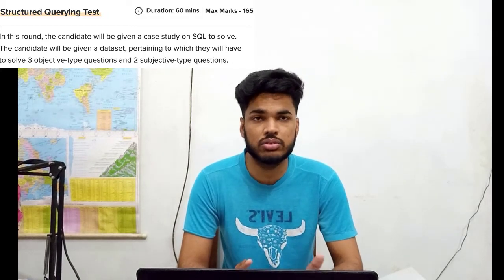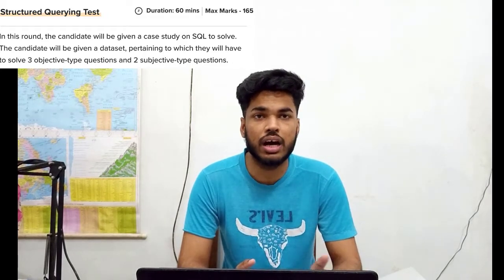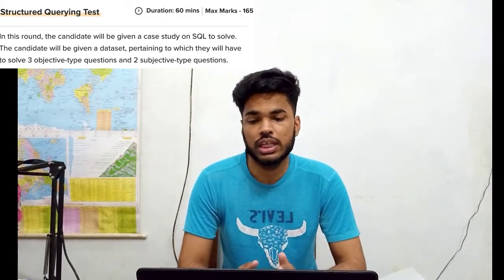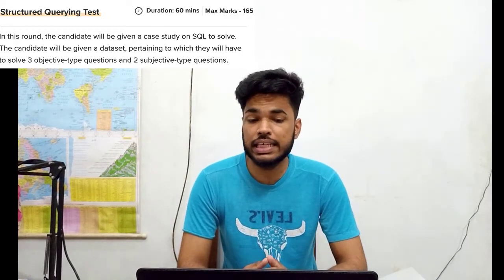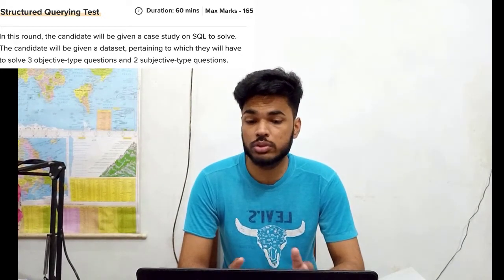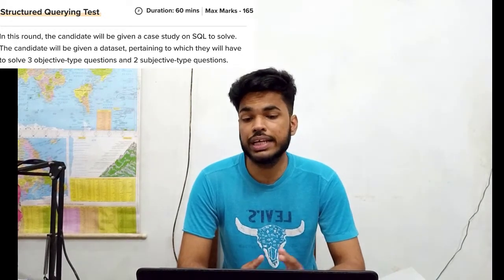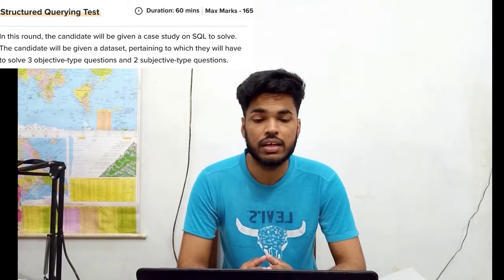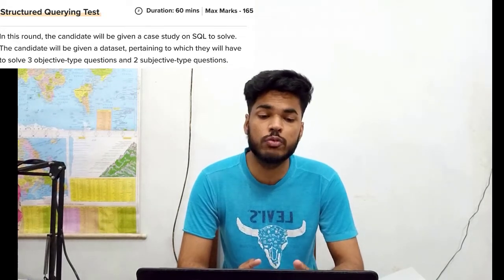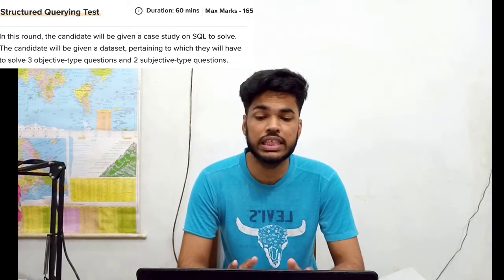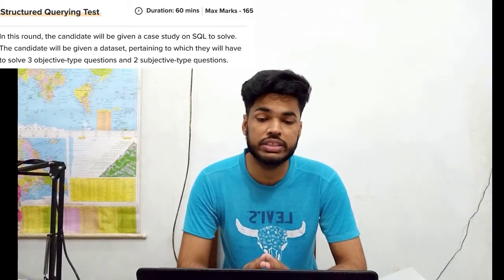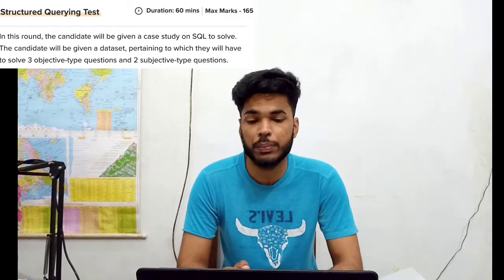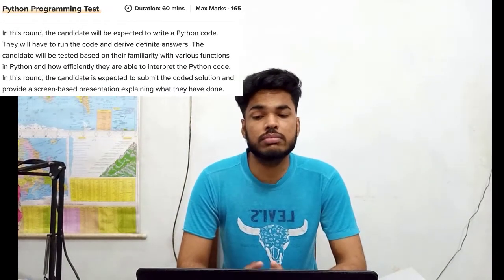Round 3 is the Structured Query Test — its duration is 60 minutes and marks allotted are 165 marks. In this round, the candidate will be given a case study on SQL to solve. They will be given a dataset and will have to solve 3 objective type questions and 2 subjective type questions.